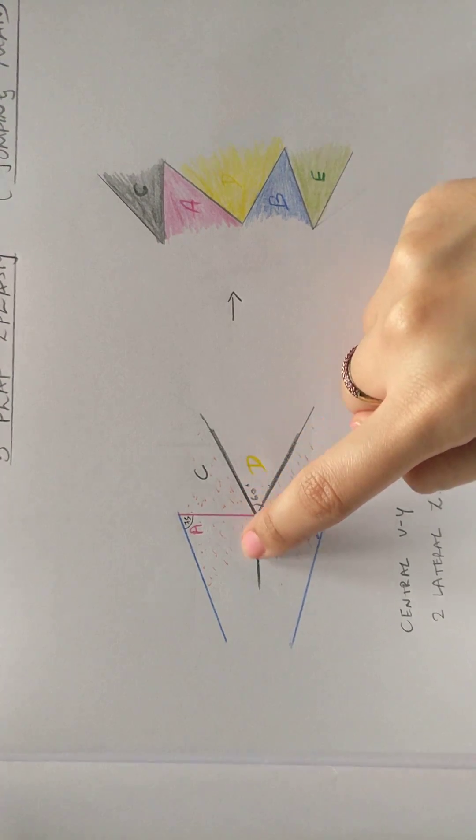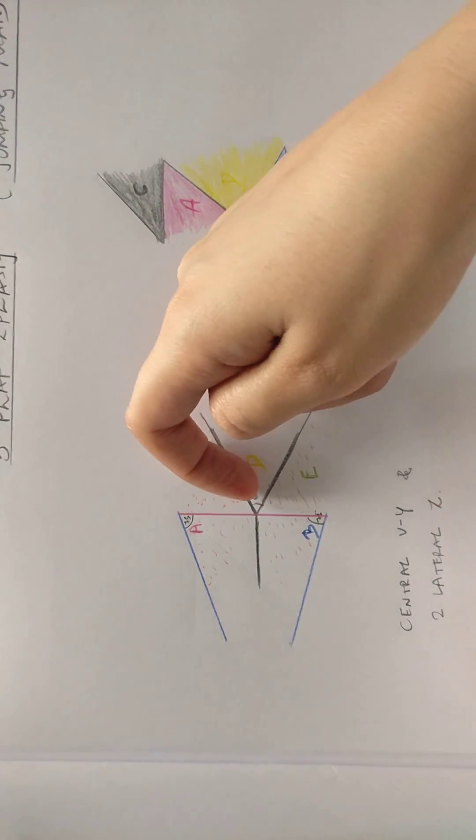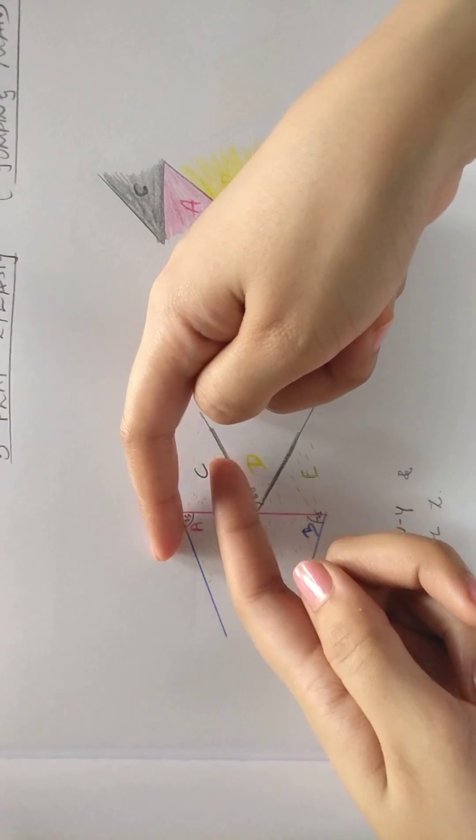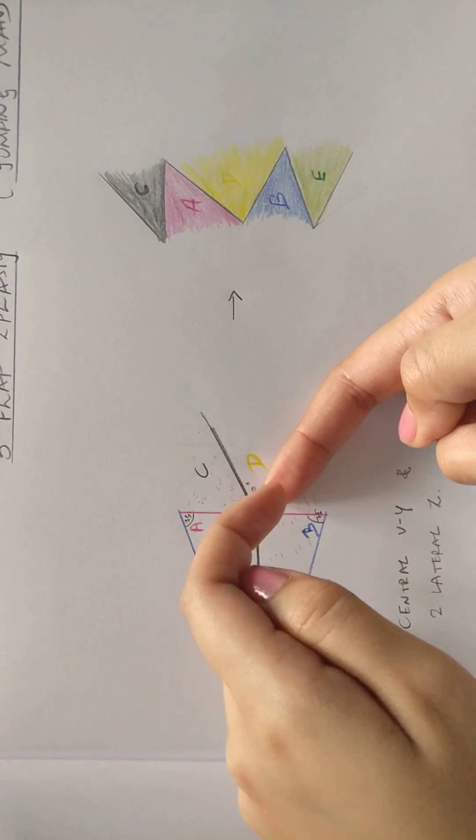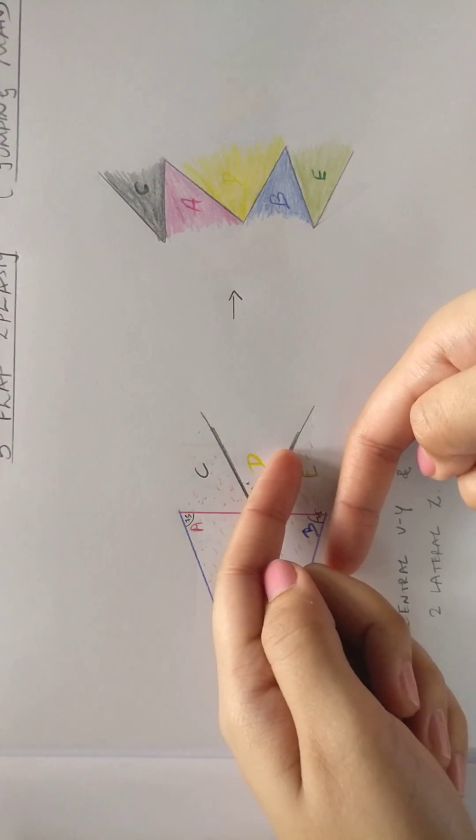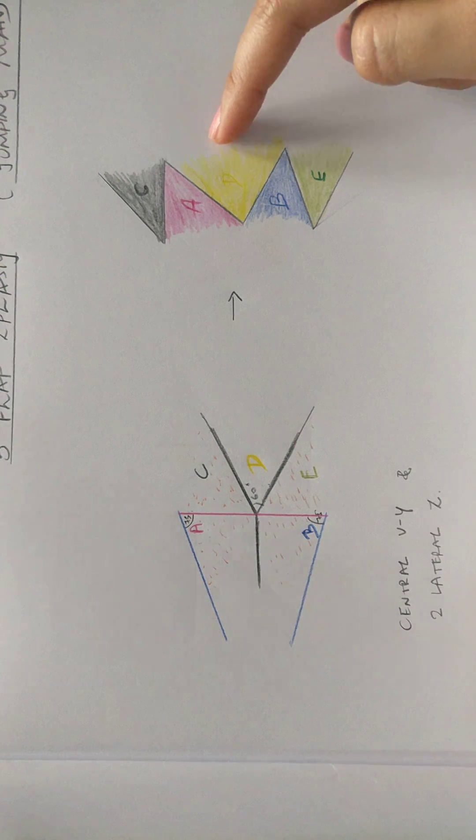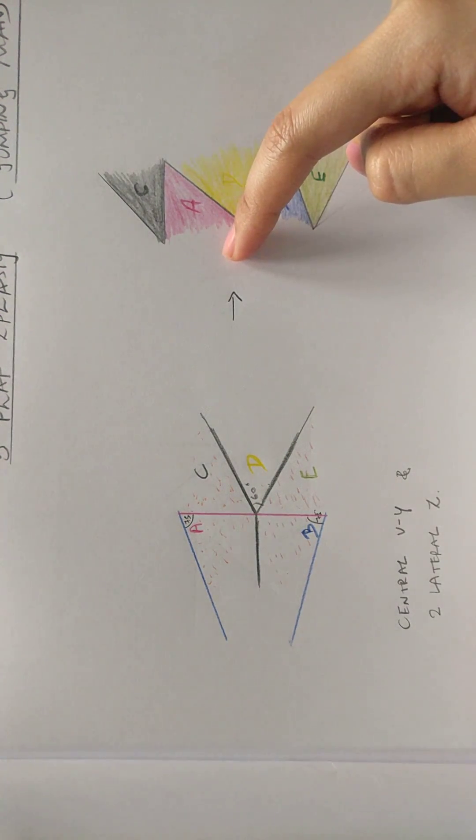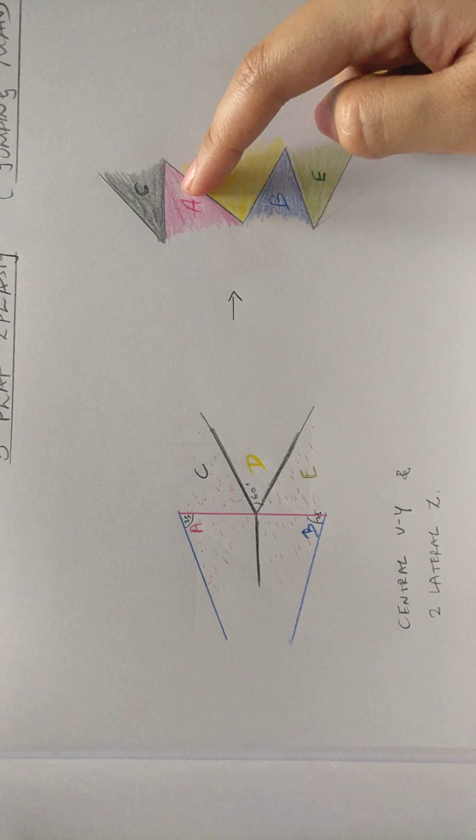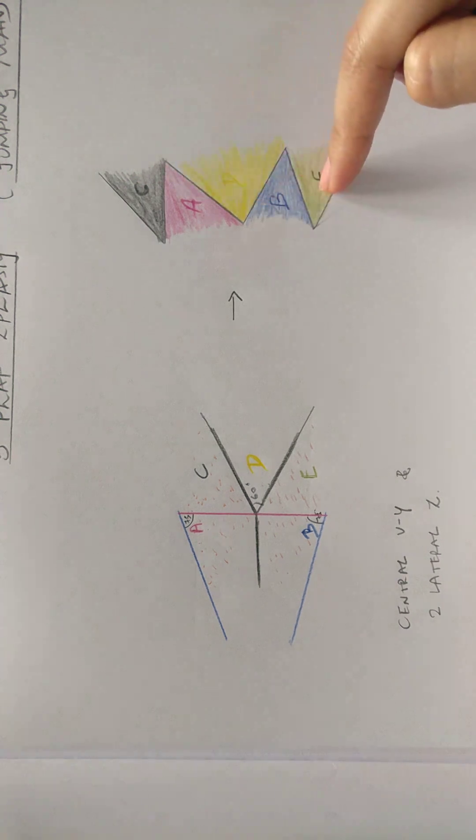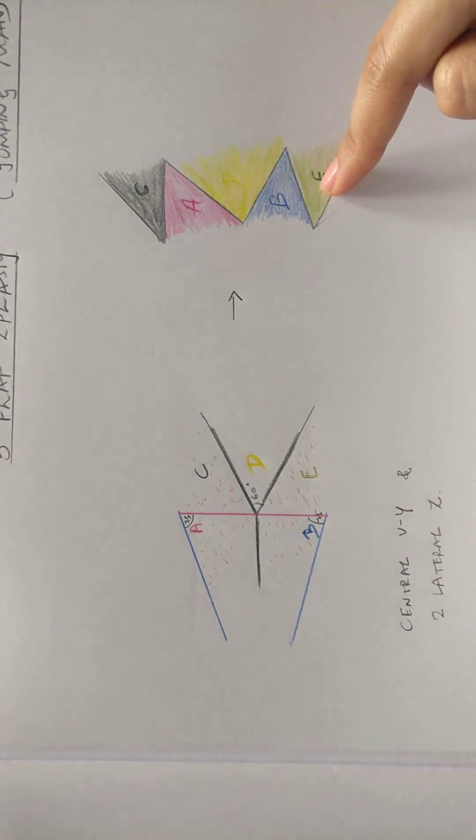So first D will move centrally, then these two flaps that is C and A will move into position and these two flaps that are B and E will again move into position. So D first comes and moves centrally giving an increase in the length, and these two flaps C and A and B and E on either side are formed by the release of the Z.